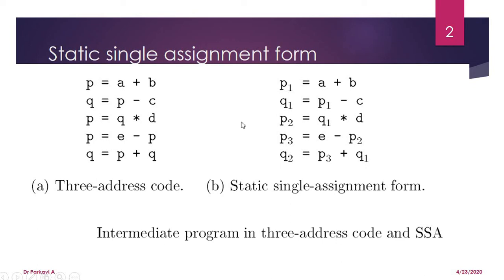The static single assignment form can also be called as SSA form. The first time p is calculated it will be written as p1, the second time as p2, and the third time as p3. Similarly, q for the first time is q1, and the second time it is q2.